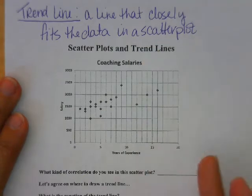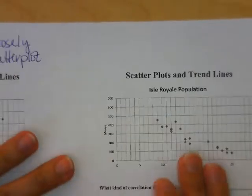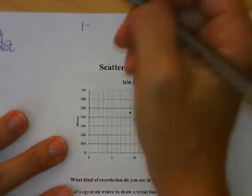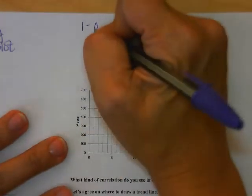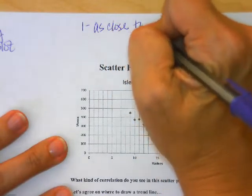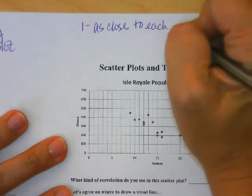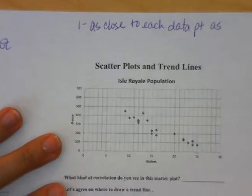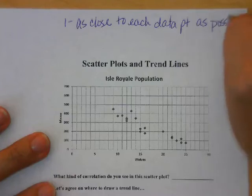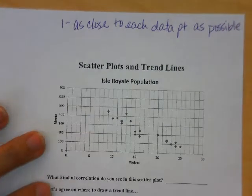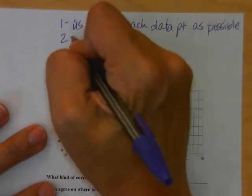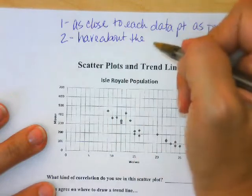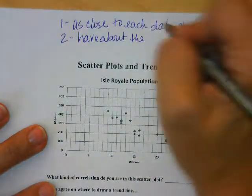The first thing we need to keep in mind when drawing a trend line is that we need to go as close to each data point as possible. We're not going to be able to go through every point because it's a scatterplot, but we need to get as close as possible. We also need to have about the same number of points on each side of the line.